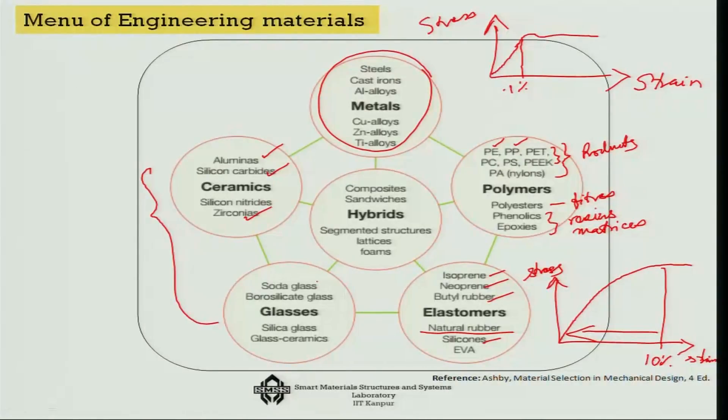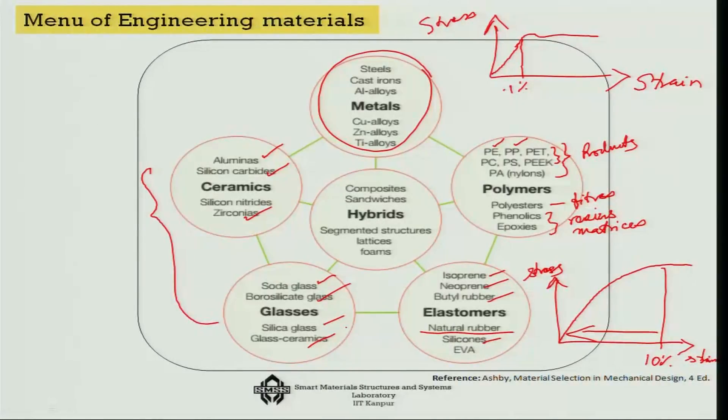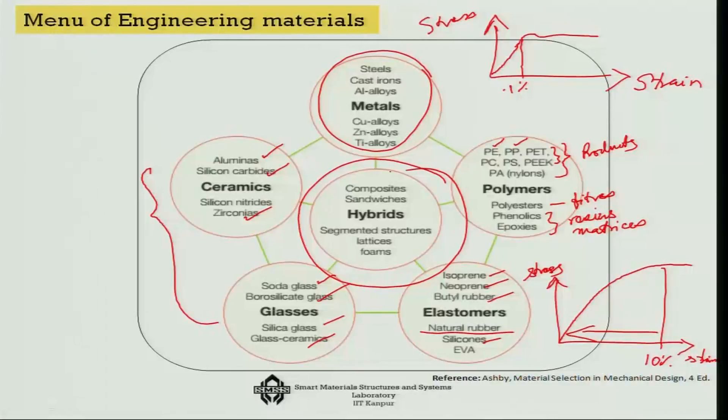Then there are glasses. Based on their origins there are soda glass, borosilicate glass, silica glass, glass-ceramics, etc. Glasses are very important because of one key property — they are transparent — which means they can be used to manipulate light waves in various forms: focusing light in lenses, passing light, or concentrating it in the form of lasers. That is the domain of engineering materials, and you can even have hybrids drawing from each category — composites, sandwiches, segmented structures, lattices, foams, etc.